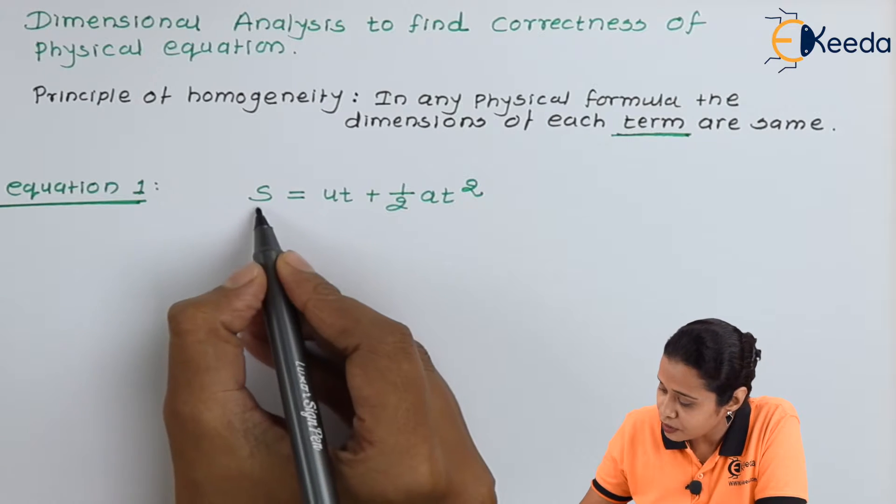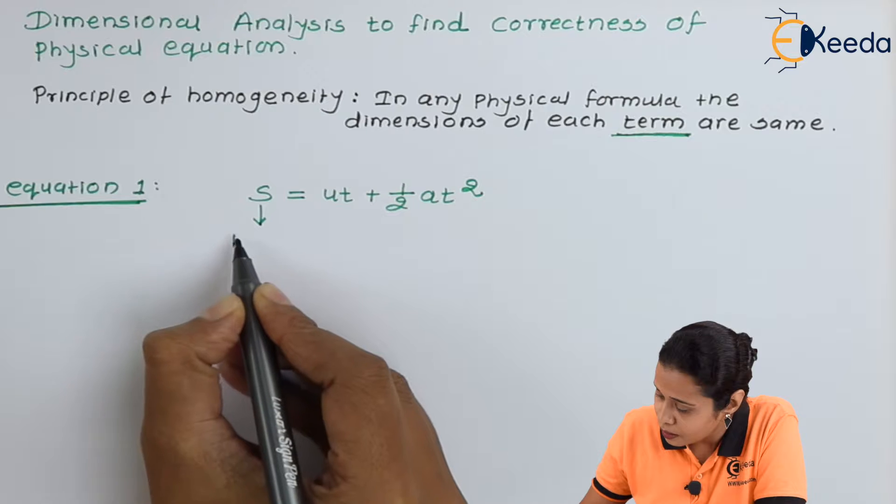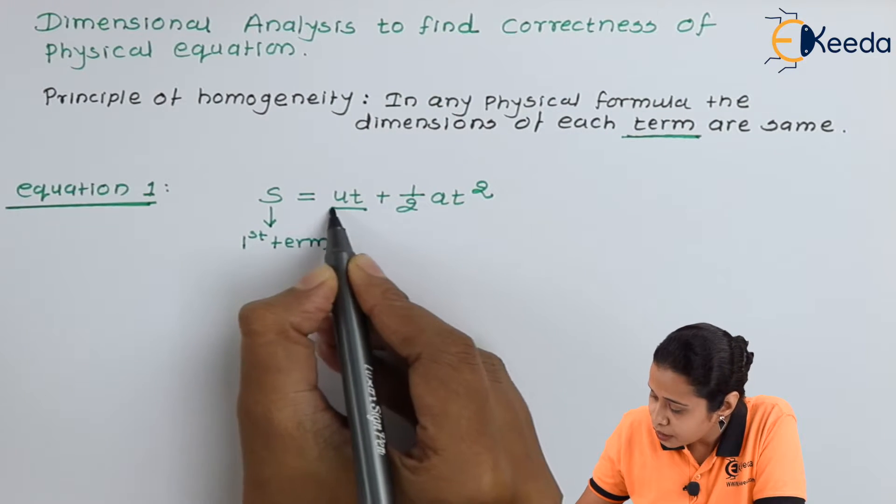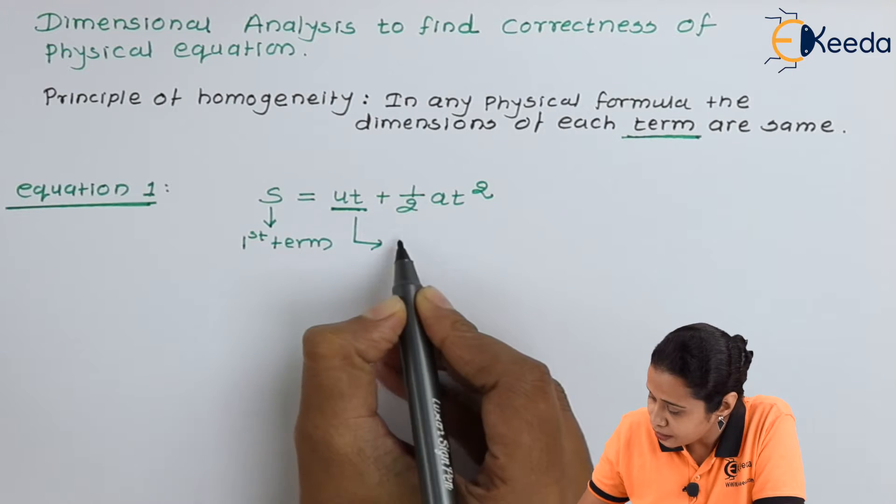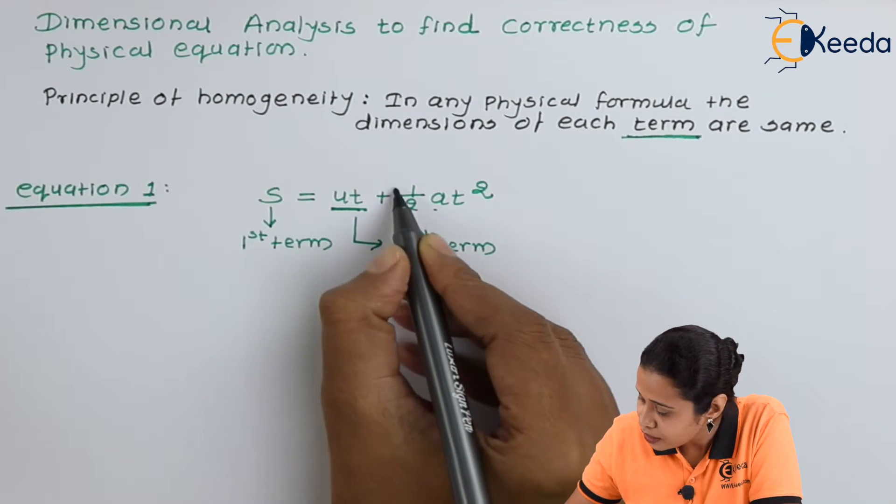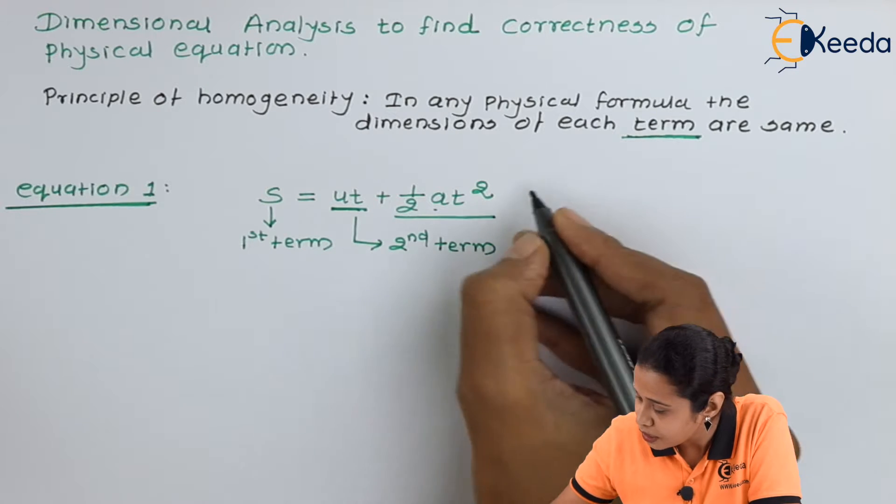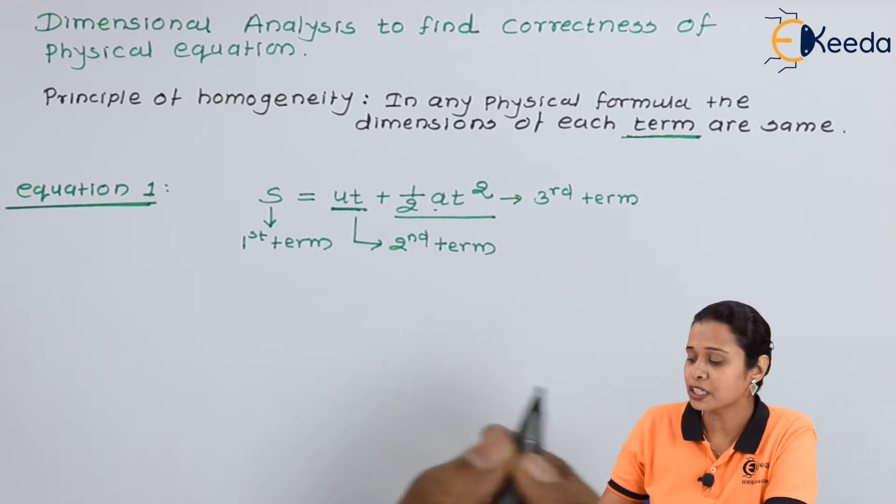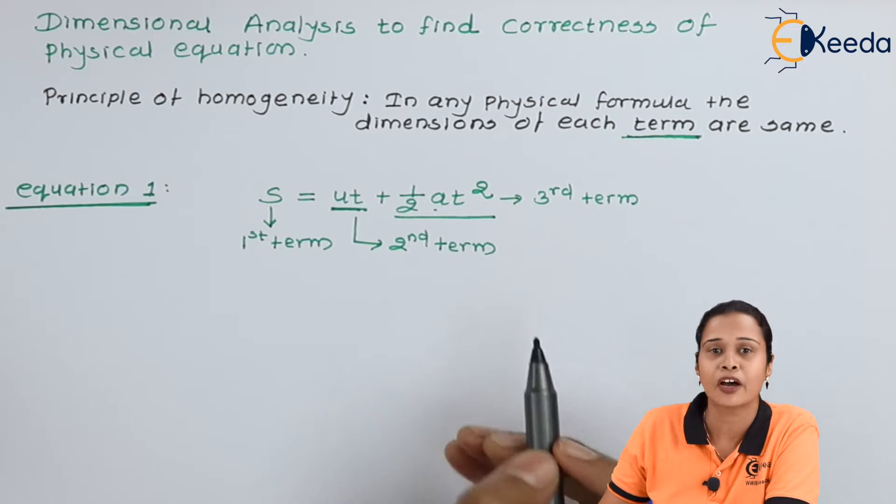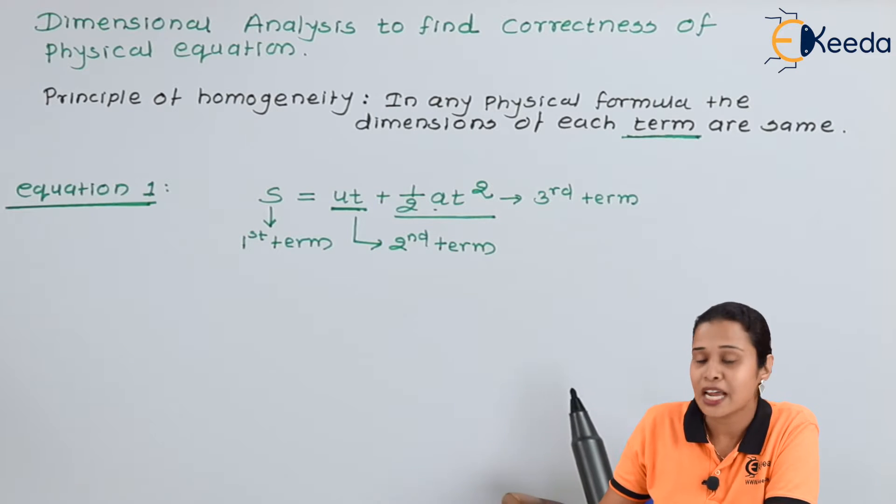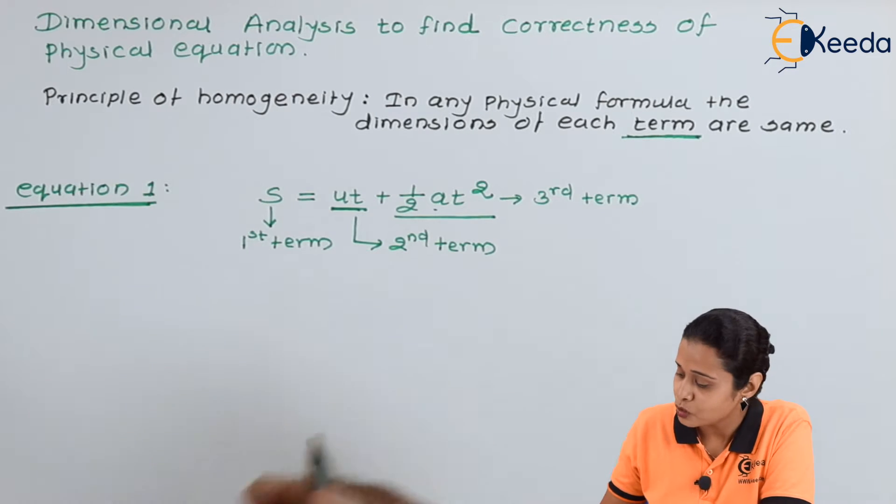Let us check how many terms are involved in this equation. Here we have a first term. At square, this entire thing will be the third term. As per the principle, each term should have same dimensions. Then only we can say this equation is dimensionally correct.